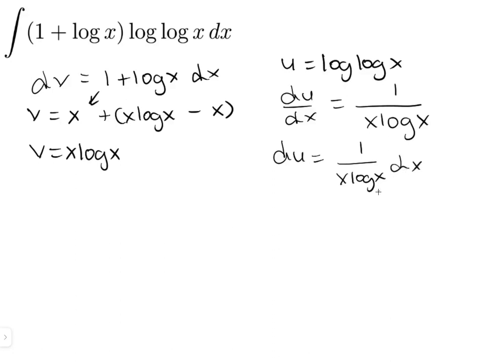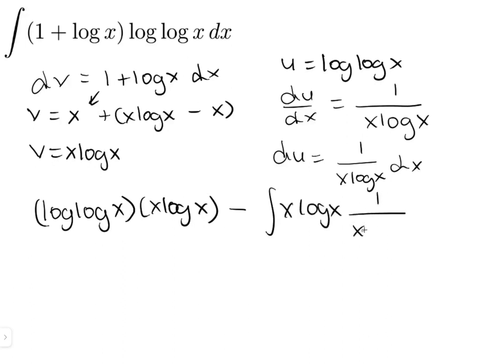So we can just integrate this by parts, so we do u times v, which is the log of the log of x times x log x minus v du, which is the integral of x log x times 1 by x log x dx.